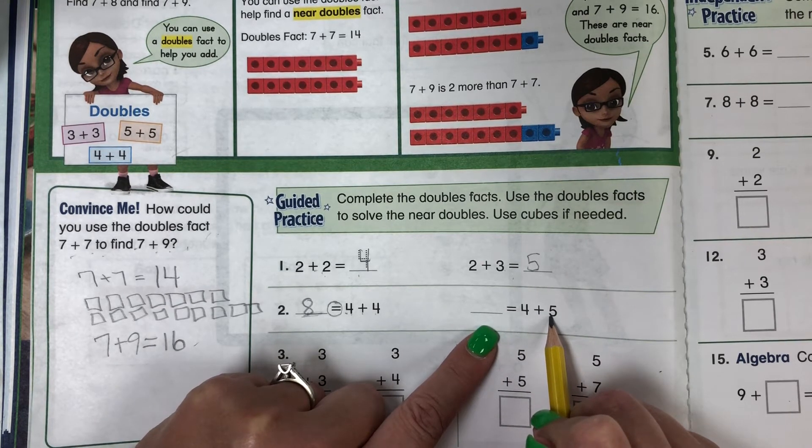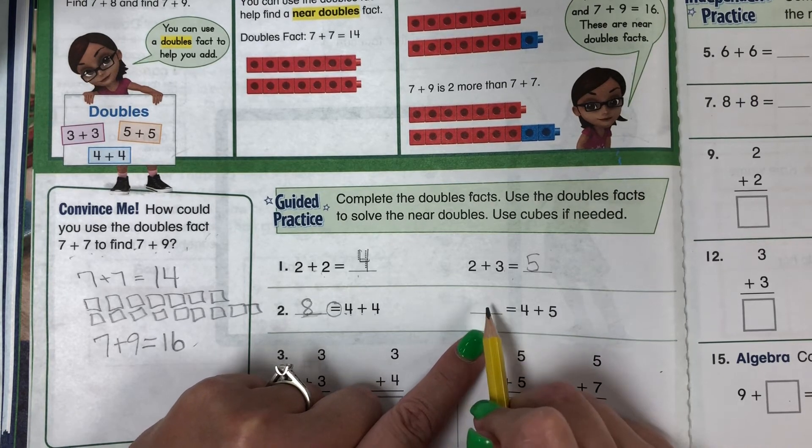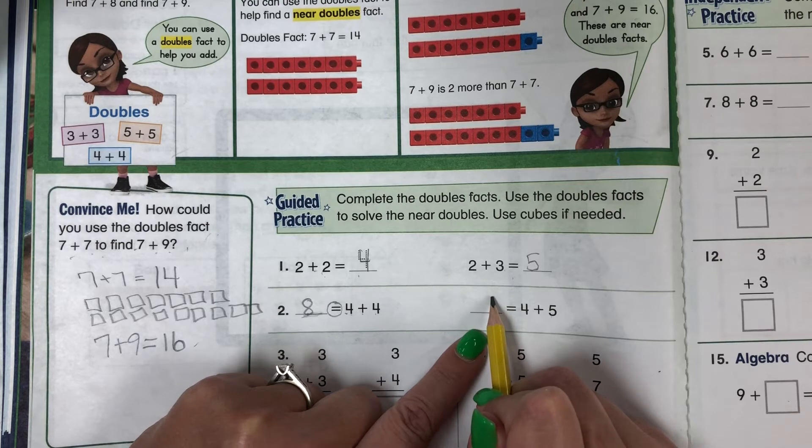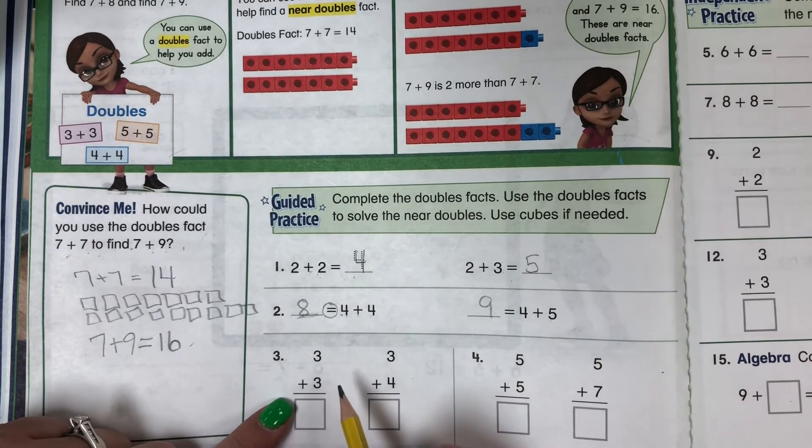4 plus 4 is 8. 5 is 1 more than 4. So 8 plus 1 more is, that's right, 9. Nice job.